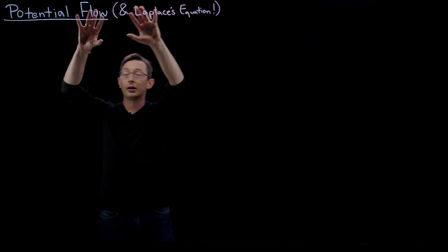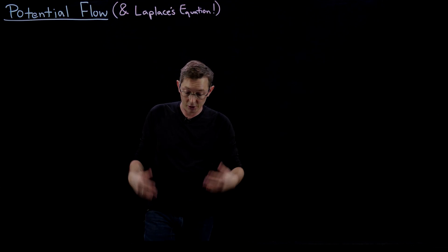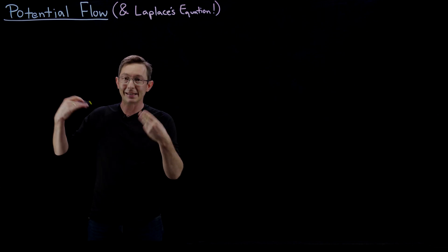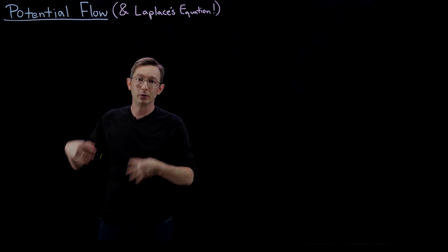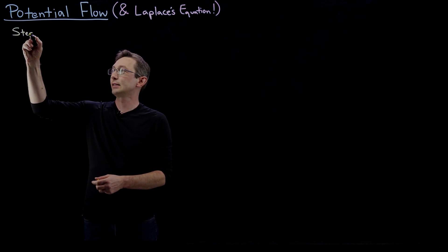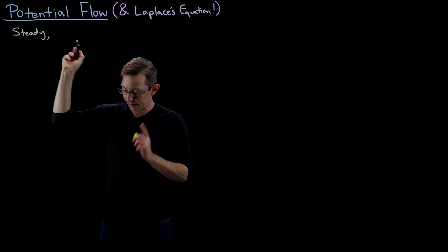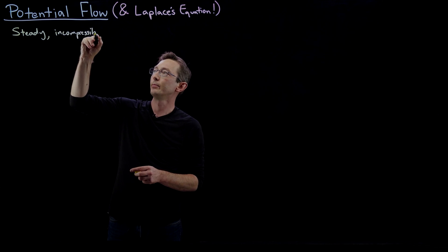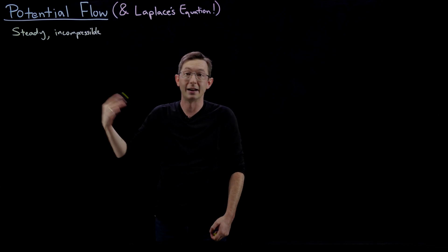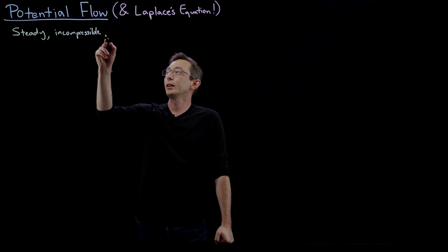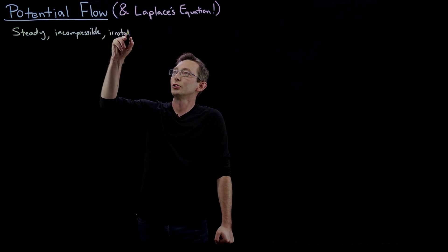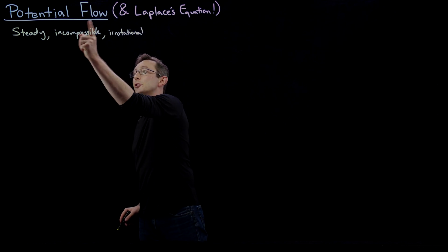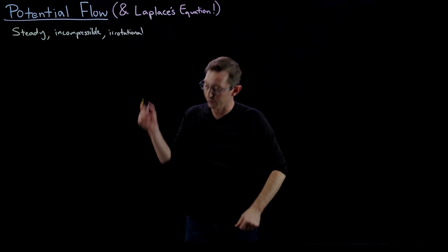We're going to develop the potential flow and Laplace's equation right now. Specifically, we define potential flow as a steady, incompressible, irrotational flow. Steady means it doesn't change in time. Incompressible means it can't be compressed — it's divergence-free. And irrotational means there's no curl or rotation of the flow. So potential flow is a steady, incompressible, irrotational flow.